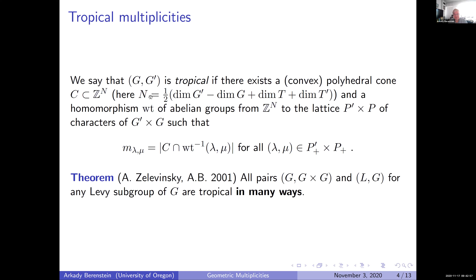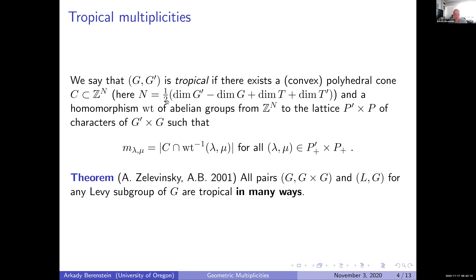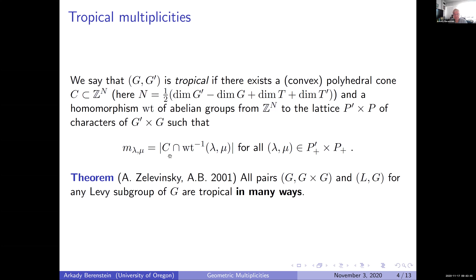Let me refer to a result that we produced with Andrei Zelevinsky in 2001, after almost 15 years of work. For that we need the notion — perhaps not the best name — of a pair (G, G') being tropical: there exists a pointed convex cone inside a lattice of rank N (some constant depending on G and G') and a homomorphism of abelian groups from that lattice to the lattice of weights of G'×G, such that the fiber over any point (λ, μ) — λ from G', μ from G — inside the cone is a polytope in the lattice. We want the multiplicity to be a tropical one, meaning the number of lattice points in that polytope.